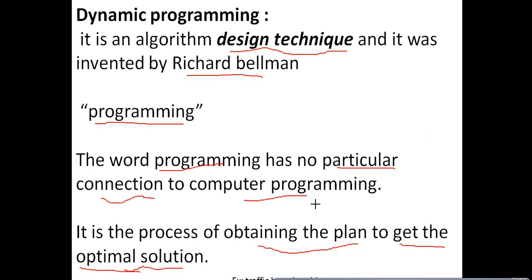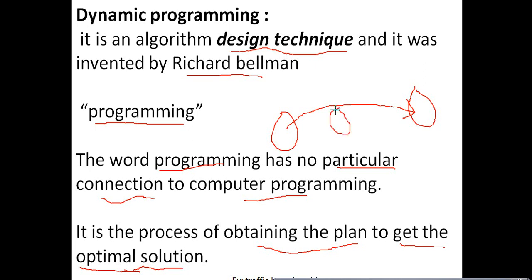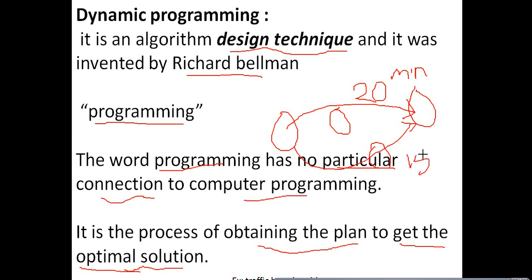Tropic Based Problem means suppose a person wants to travel from one place to another place via two more places. If this person travels from one direction, it takes 20 minutes. And if the same person travels through another route, it will take 15 minutes. Which one takes less time? Of course, through the second route. So this is called an optimal solution.